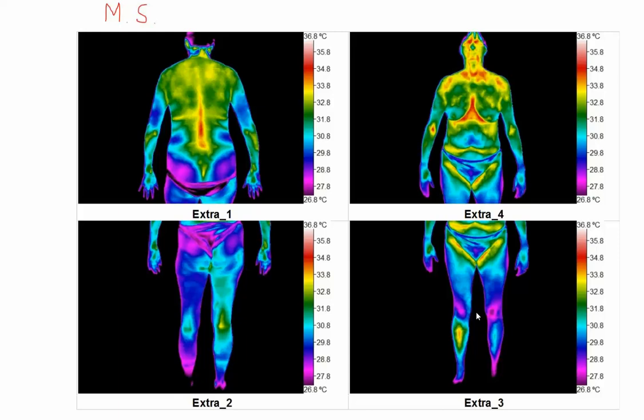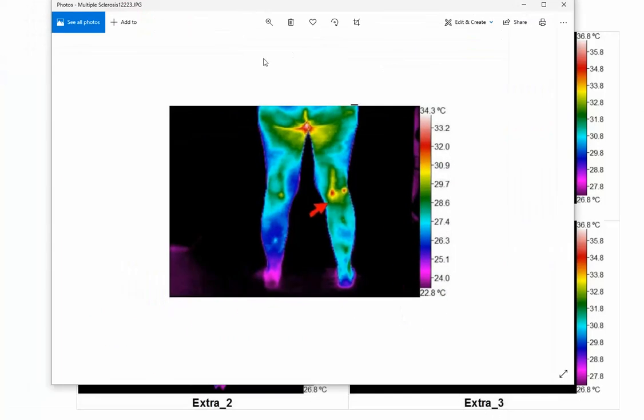I've seen this with several cases of multiple sclerosis in the past. I have another case here that I'm showing you. You can see the lower leg here into the medial thigh as well is hypothermic. This is a separate patient.